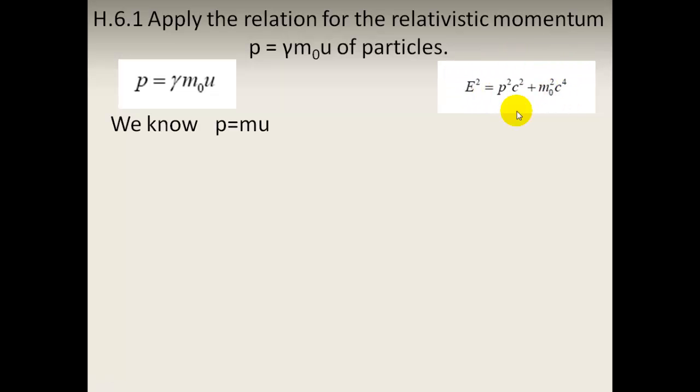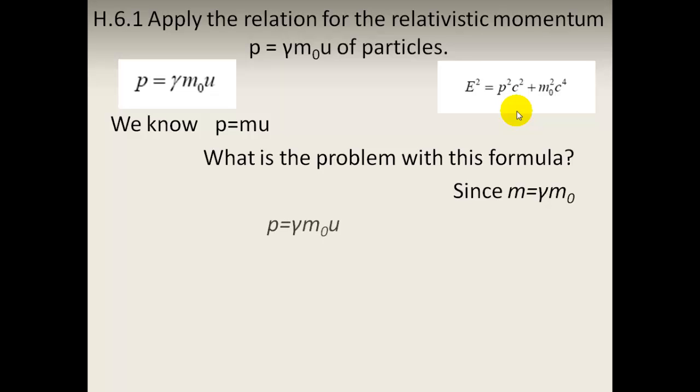We know that momentum equals mass times velocity. The problem is that this has to be modified to include the relativistic mass, so the mass equals gamma times the rest mass.